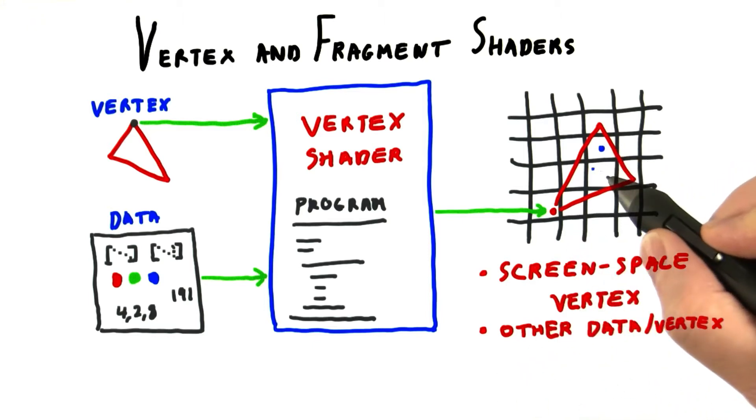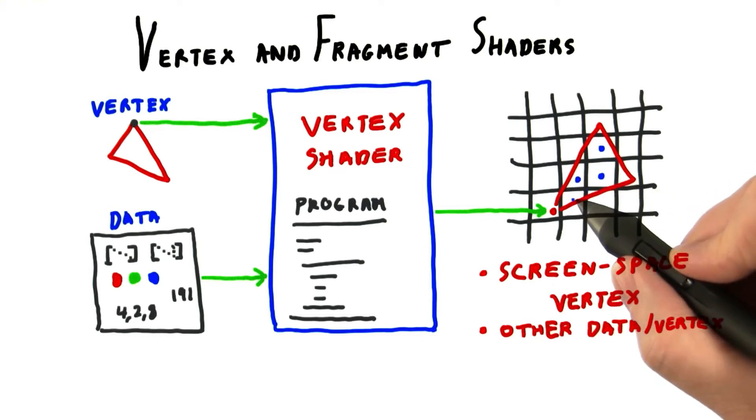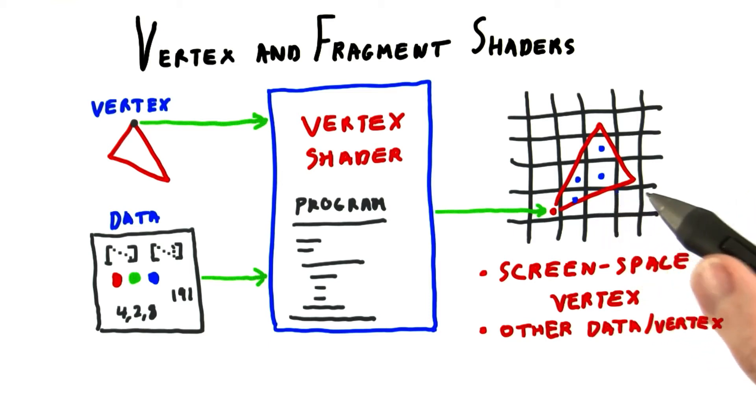The transformed triangle is then rasterized. Triangle setup sends the data at each pixel inside a triangle to another programmable unit, the fragment shader.